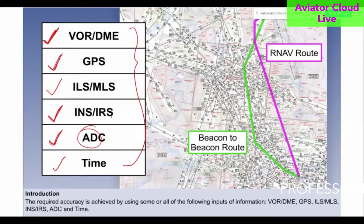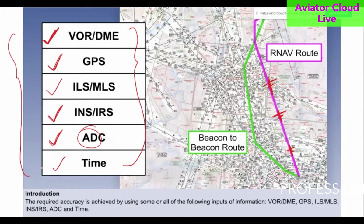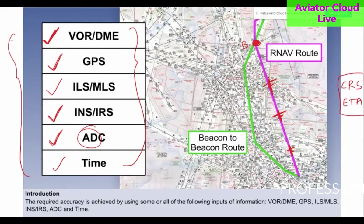All this input information is processed within the RNAV system in the aircraft to give the most accurate and continuously updated position. Your aircraft position is continuously updated with good accuracy using all these inputs. You will also get other displayed information such as the course, the estimated time of arrival — meaning what time you will reach point B.